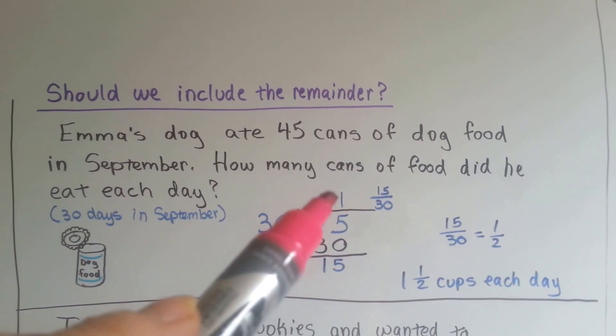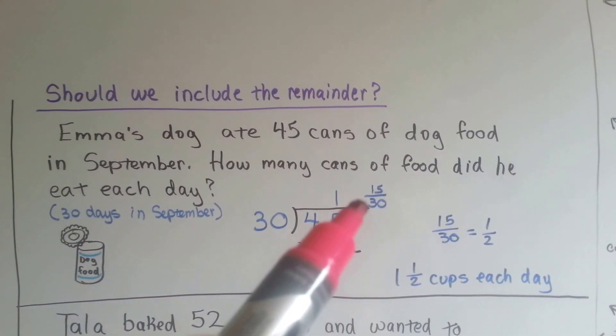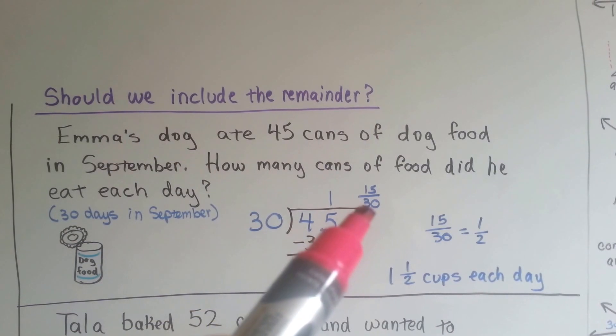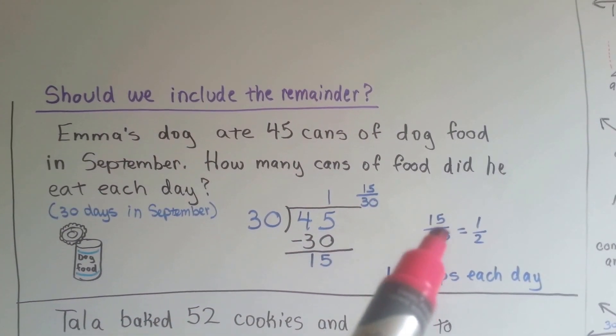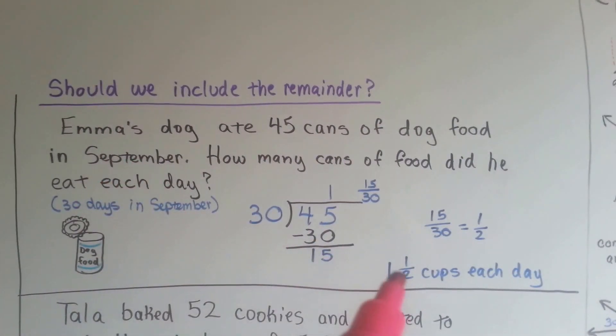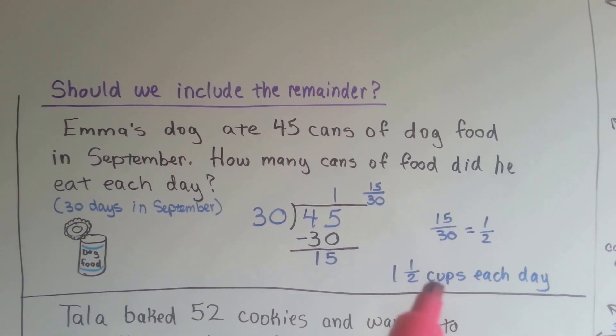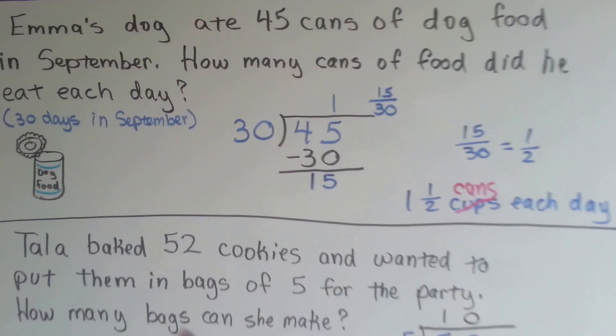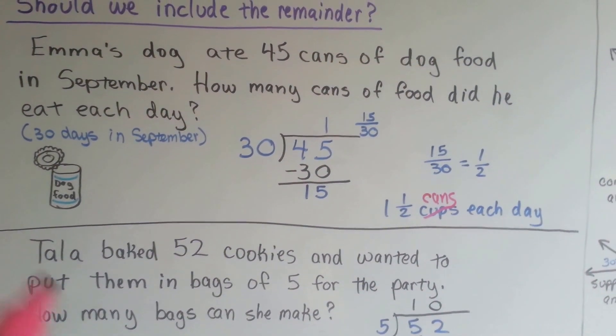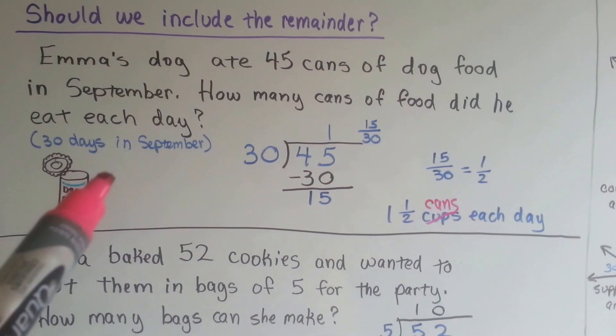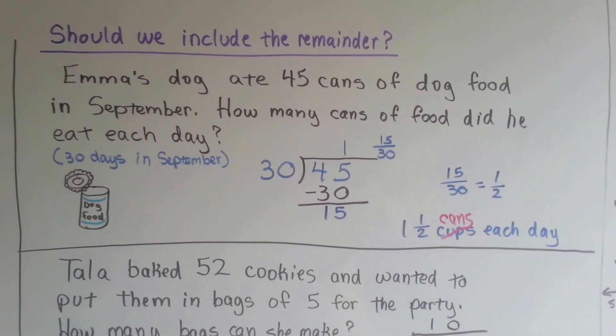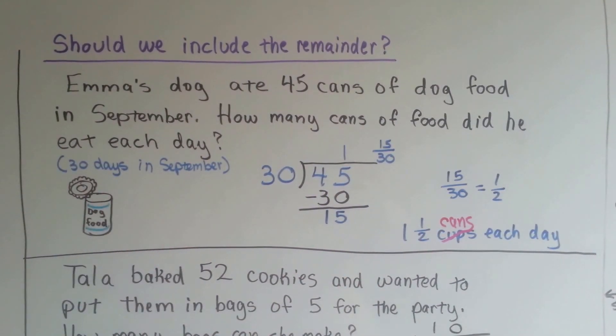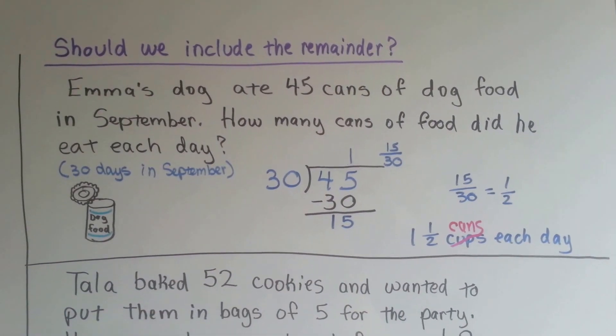Well, 30 only fits into 45 once. And it leaves 15 of 30 left over. Well, 15 is half of 30. See, 15 goes into 30 two times. So it actually reduces as a fraction to one half. So her dog ate one and a half cans each day. This should be cans. So her dog ate one and a half cans each day. That is important. That's a half a can of dog food that her dog ate. So it would be three cans in two days. It ate one and a half cans each day. So that's important. We did need to count the numerator. The remainder.